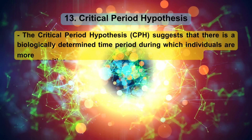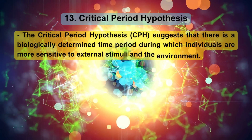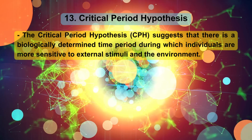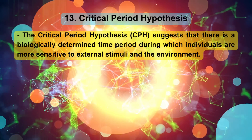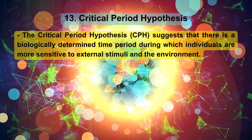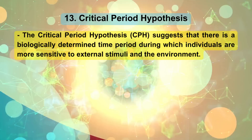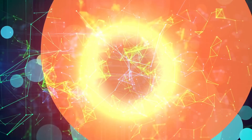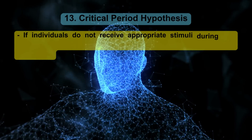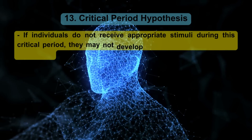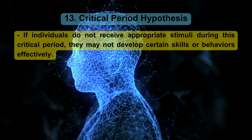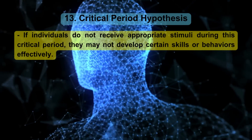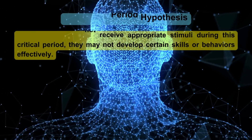Critical period hypothesis: The critical period hypothesis (CPH) suggests that there is a biologically determined time period during which individuals are more sensitive to external stimuli and the environment. If individuals do not receive appropriate stimuli during this critical period, they may not develop certain skills or behaviors effectively.